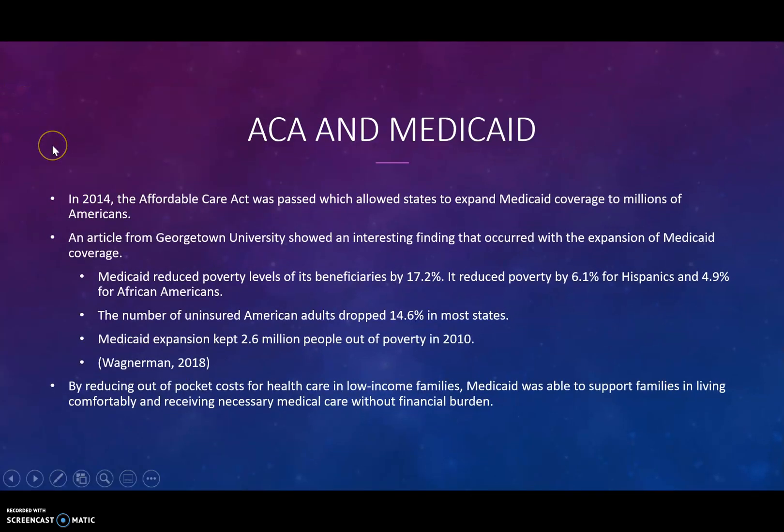Regarding the ACA and medical care: in 2014, the Affordable Care Act was passed, which allowed states to expand Medicaid coverage to millions of Americans. A study from Georgetown University showed that Medicaid reduced poverty levels of its beneficiaries by 17.2%, reduced poverty by 6.1% for Hispanics and 4.9% for African Americans. The number of uninsured Americans dropped 14.6% in most states, and Medicaid expansion kept 2.6 million people out of poverty in 2010. By reducing out-of-pocket costs for health care in low-income families, Medicaid supported families in receiving necessary medical care without financial burden.